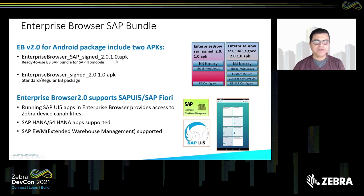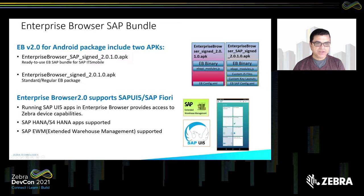There are two bundles: one is the SAP-signed version and another is a regular APK. On the right-hand side you can see the differences — we are adding high-level components with several smaller components underneath, including a custom JS file and custom key layouts. Enterprise Browser supports both SAP UI and SAP Fiori, including EWM — External Warehouse Management.